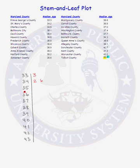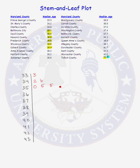There will be 6 data values that begin with the stem of 35: 35.0, 35.5, 35.5, 35.6, 35.8, and 35.9. Then we have 36.0, 36.2, 36.5, 36.8, and 36.9.